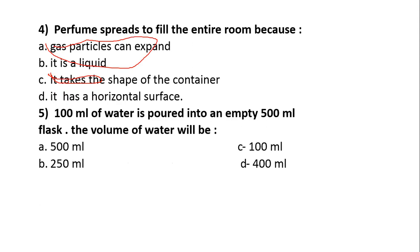100 milliliters of water is poured into an empty 500 milliliters flask. The volume of water will be 500 milliliters, 100 milliliters, 250 or 400. Water is liquid. If liquid takes the shape of the container, the volume doesn't increase. So the volume is still 100 milliliters. This is the right answer.